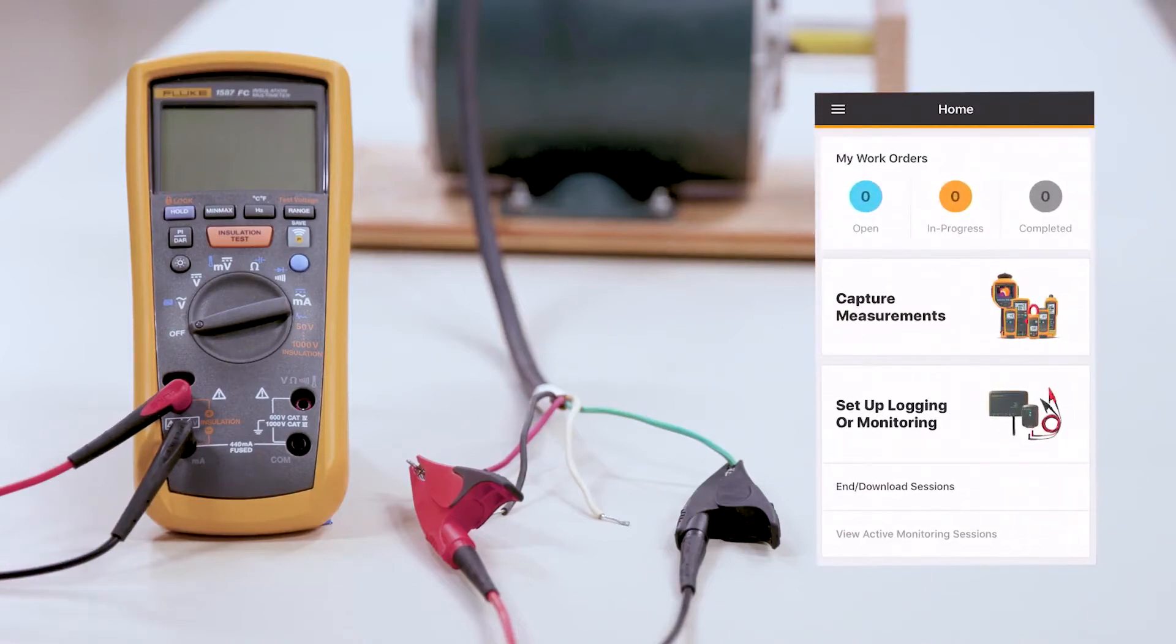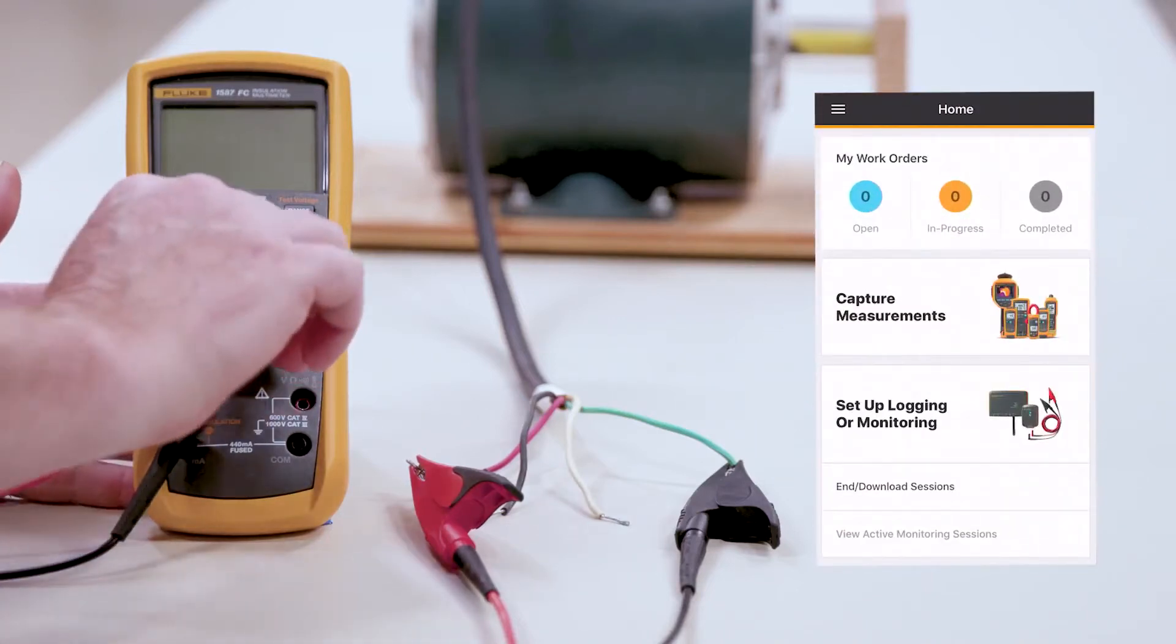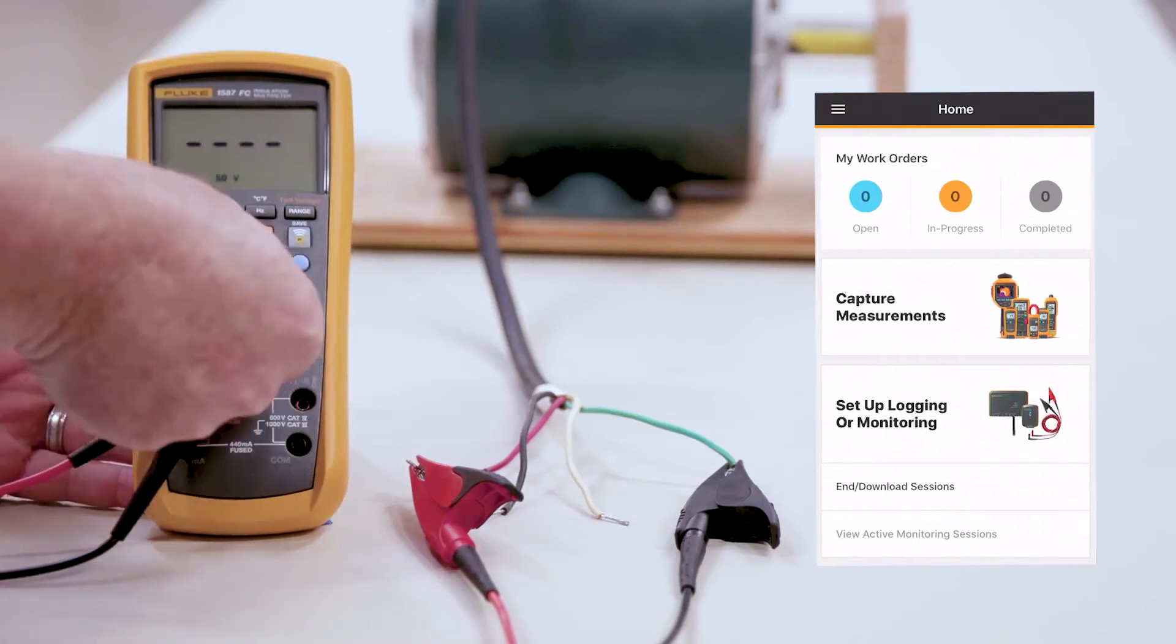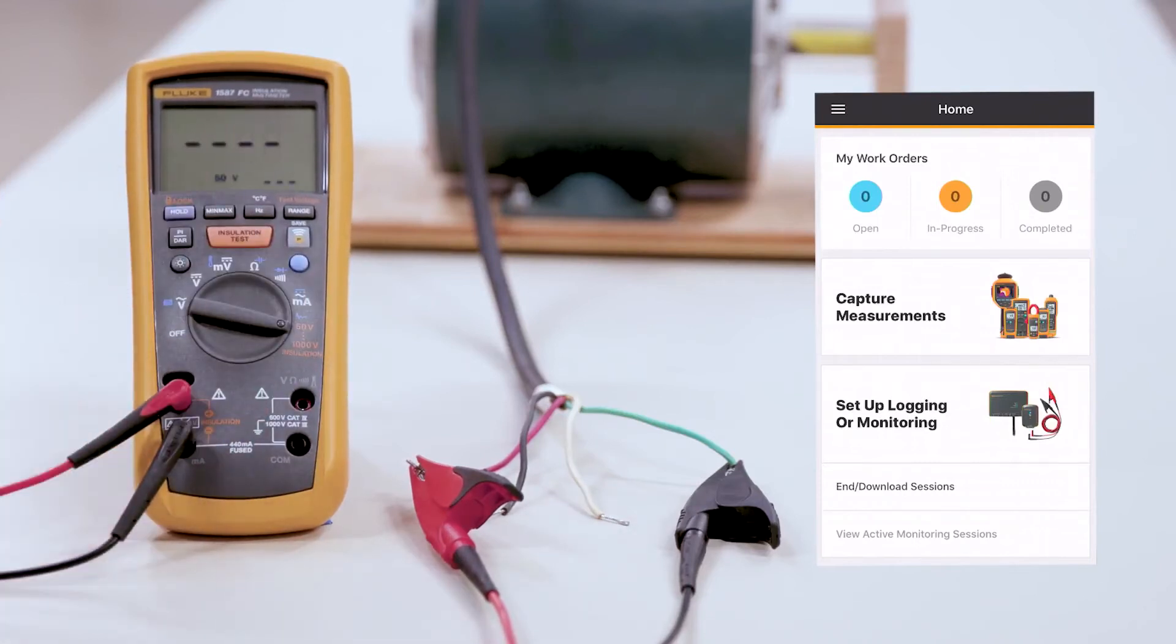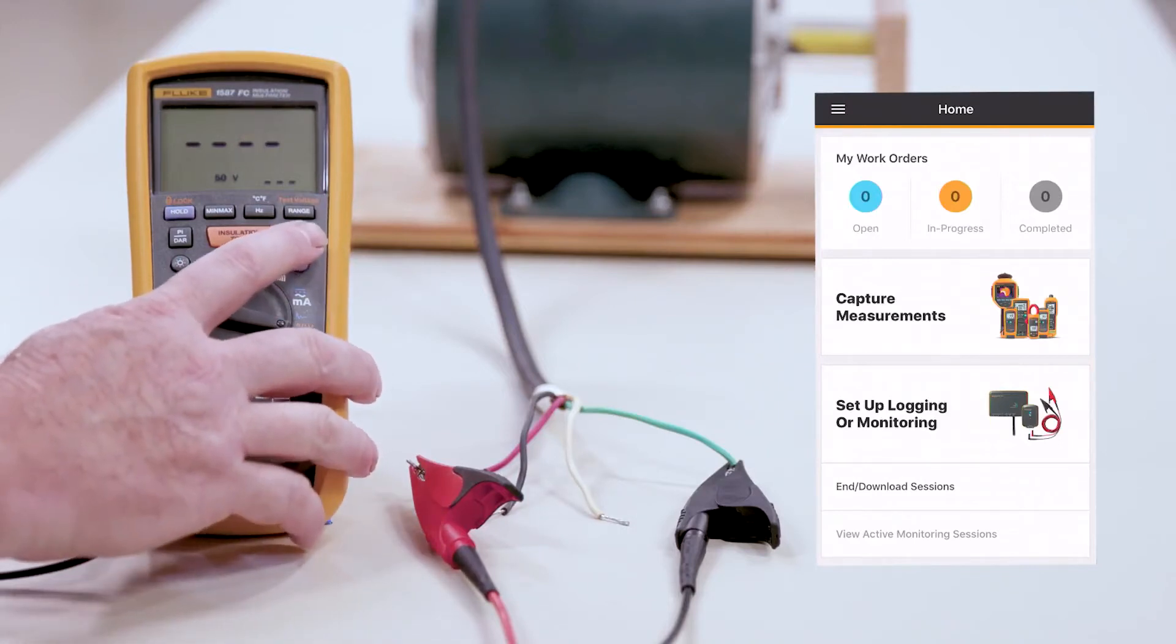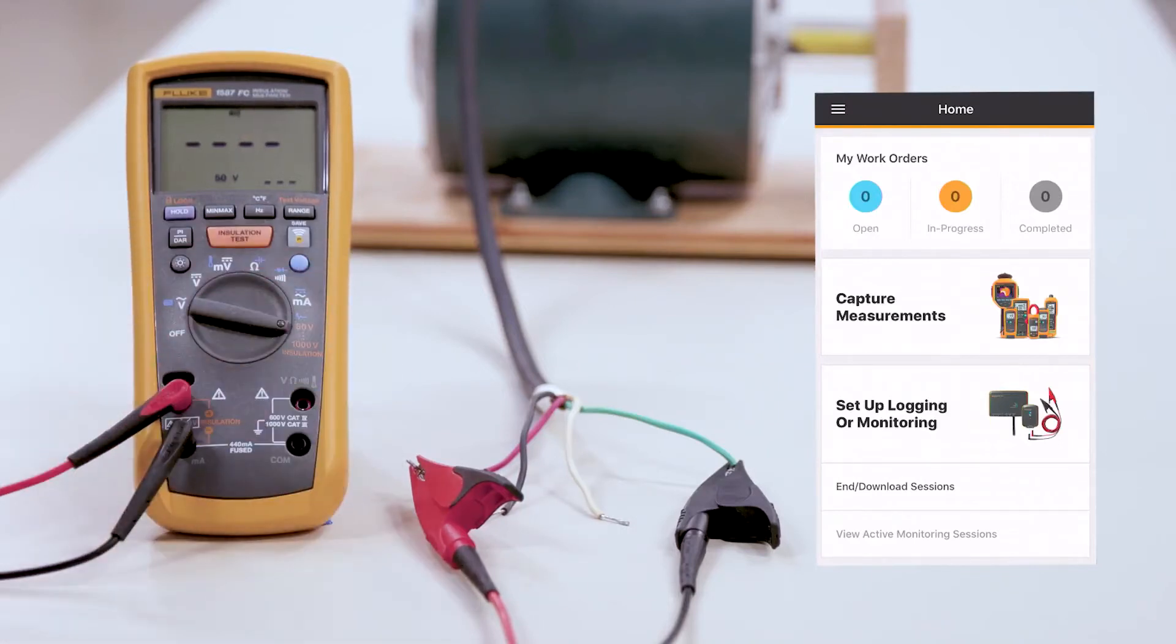At this point here, we want to go ahead and turn the meter on, all the way over to the far right in the orange for our insulation test. In the corner here, we'll hit the Fluke Connect button.